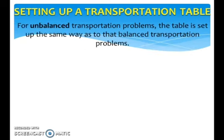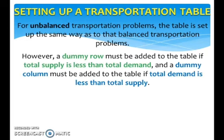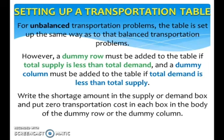For unbalanced transportation problems, the table is set up the same way as balanced transportation problems. However, a dummy row must be added to the table if total supply is less than total demand, and a dummy column must be added if total demand is less than total supply. Write the shortage amount in the supply or demand box and put zero transportation costs in each box in the body of the dummy row or dummy column.